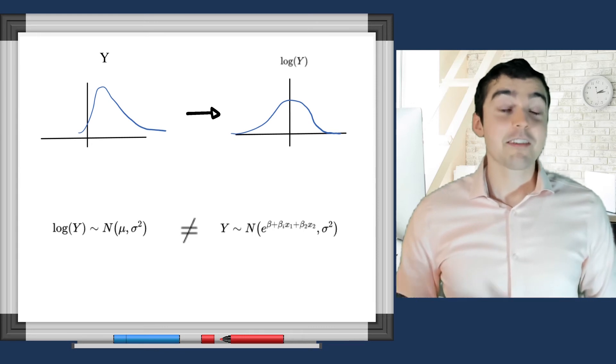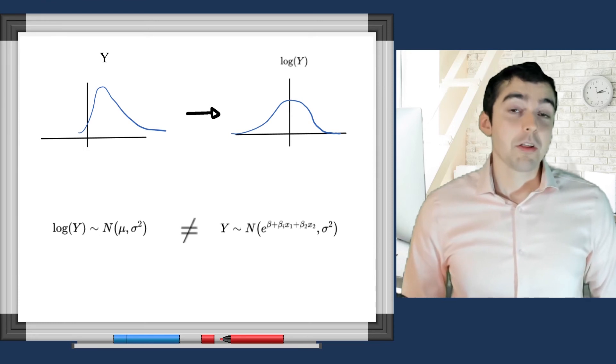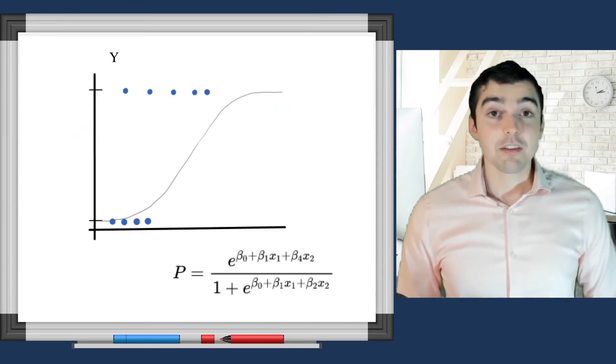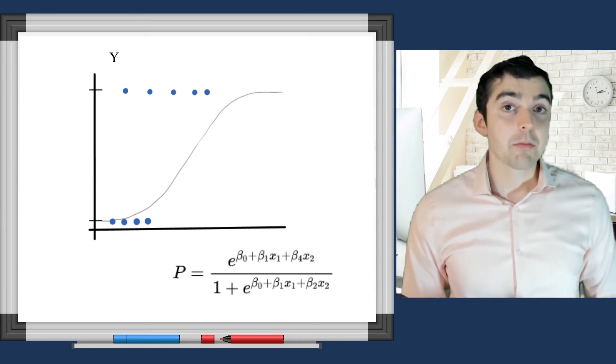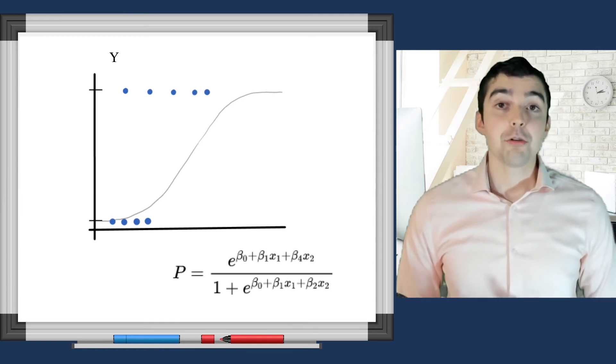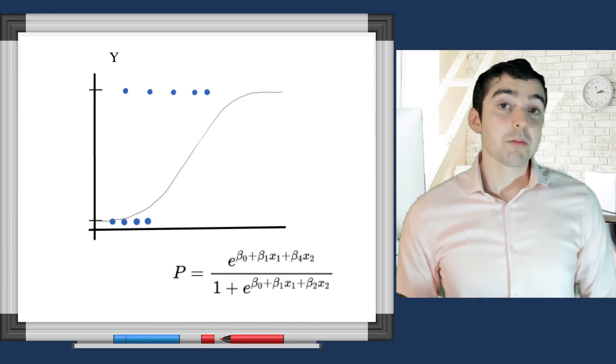You can also extend these to include binomial outcomes, where the outcome is either 0 or 1. This is analogous to a coin flip, which would count the number of heads and the number of tails. In this case, you use what's called a logit link function and the binomial response family.